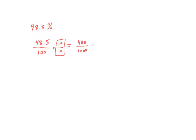And now I can go ahead and simplify. 485 and 1,000 both share a common factor of 5. So I can divide by 5 over 5.